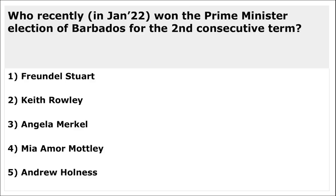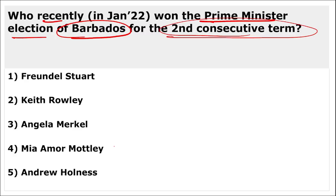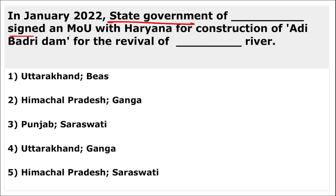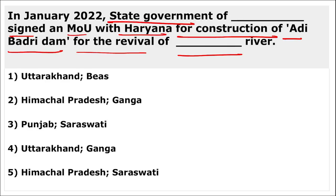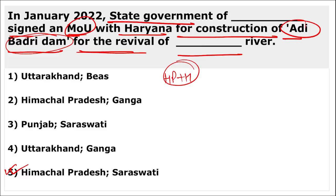Mia Amor Mottley won the Prime Minister election of Barbados for the second consecutive term. Himachal Pradesh and Haryana signed an MoU for the construction of the Adi Badri Dam for the revival of the Saraswati River.